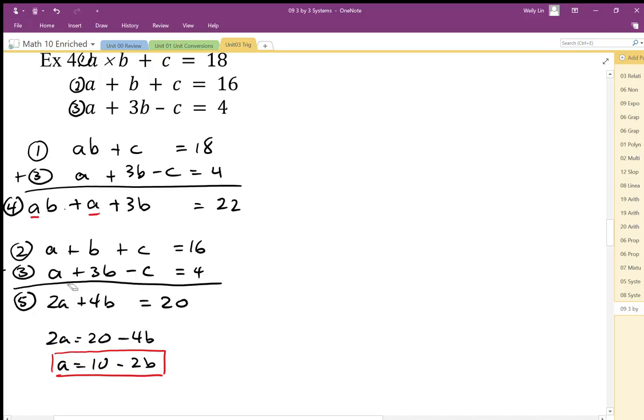And that would be difficult to do if I were to do addition subtraction because these variables would be hard to eliminate because of that extra b tied with the a, and vice versa. If I want to get rid of the b, the a is tied to the b.